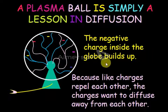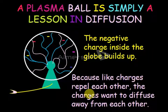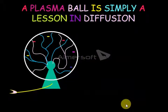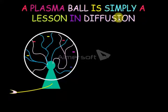The negative charges inside the globe build up because like charges repel each other — the charges want to diffuse away from each other. So the plasma ball is simply a lesson in diffusion.